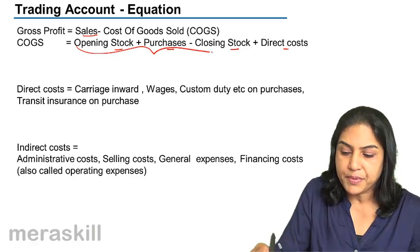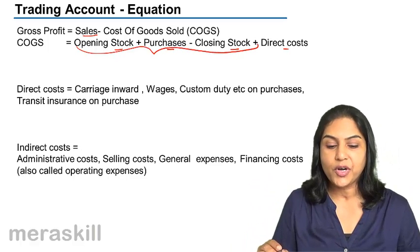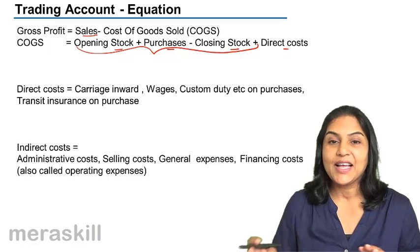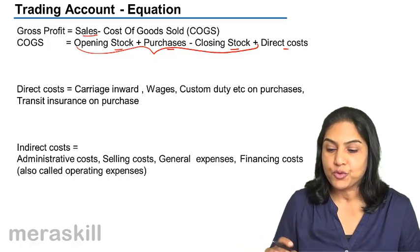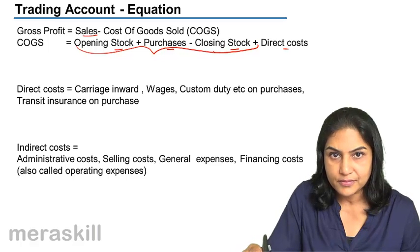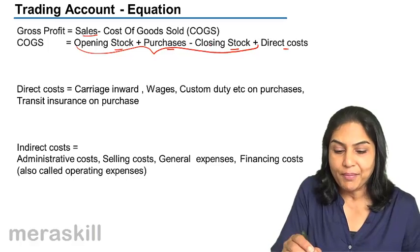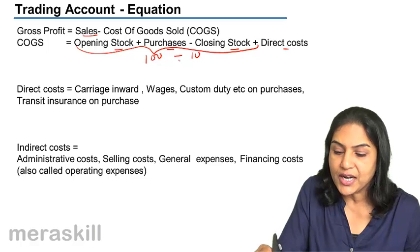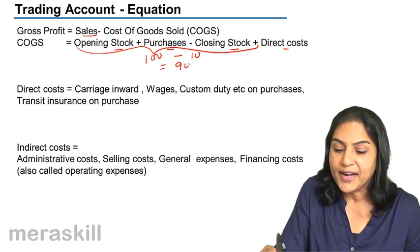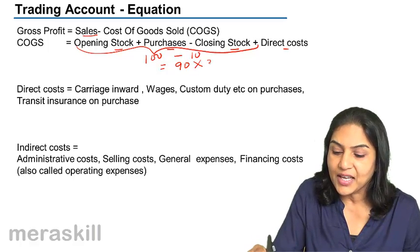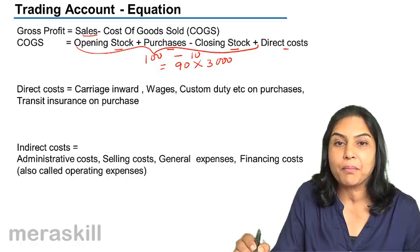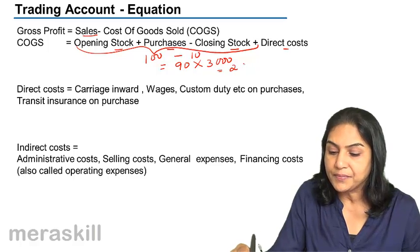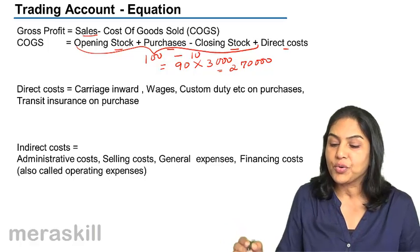Cost of goods sold is computed as opening stock plus purchases minus closing stock plus direct cost. Suppose we have bought 100 mobile phones this month and we sell only 90 phones — we have 10 phones of closing stock. We bought 100 phones but were unable to sell 10, which means we sold only 90 phones. 90 phones into 3,000 gives us a total gross profit of 2,70,000.